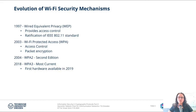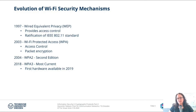The evolution of Wi-Fi security mechanisms was as follows. In 1997, Wired Equivalent Privacy — short WEP — was introduced as a ratification of the IEEE 802.11 standard. It was meant to provide access control and other features, but some researchers found out that there were problems with it — for example, passive and active attacks. One of the active attacks led to the decryption of traffic within the network, which is not good at all.